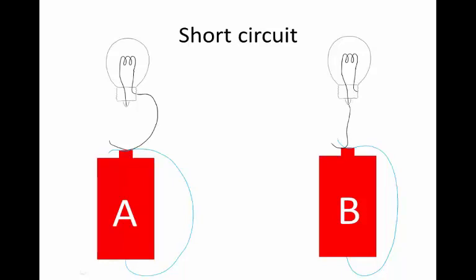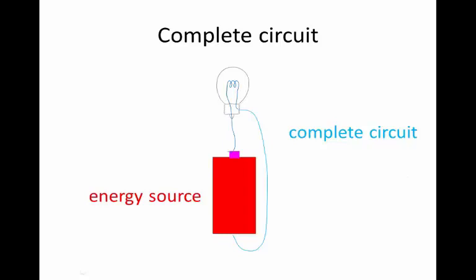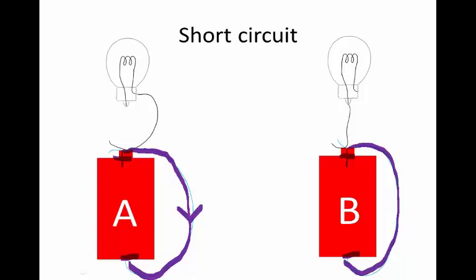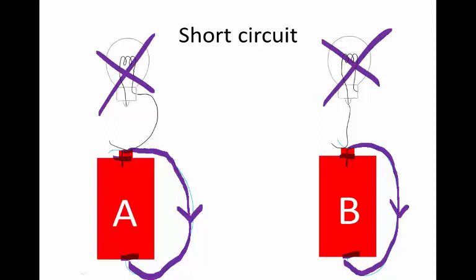What does this mean? Let's first see why there is current flowing through these two. The two requirements for current to flow are met here: we have an energy source creating a potential difference between the two terminals of the battery, and we have a complete conducting path between the two terminals. So current will flow around the circuit. The problem, though, is that the bulb is not part of the circuit in either case, and so the bulb will not shine.